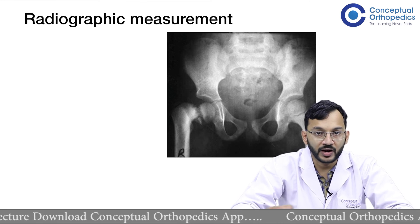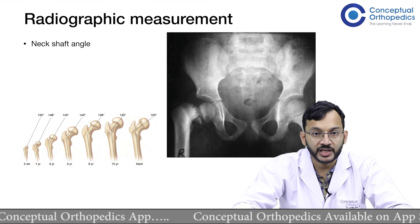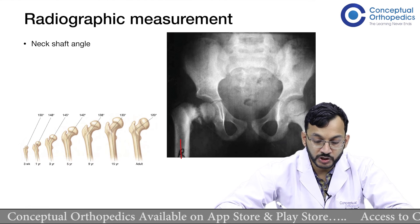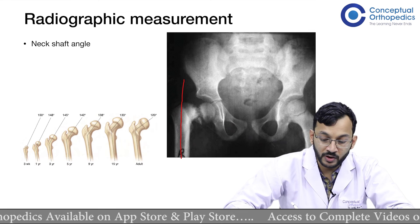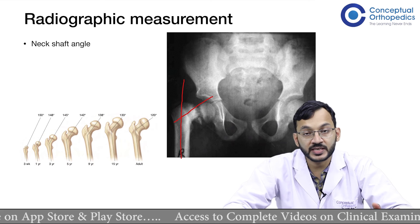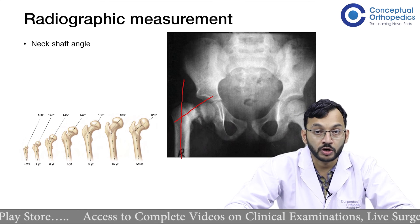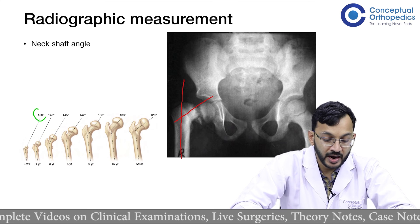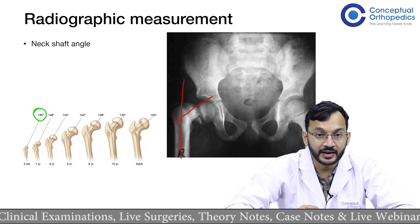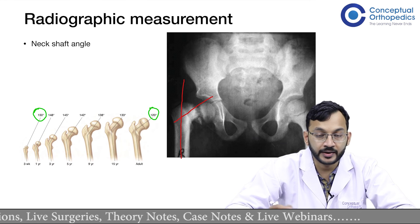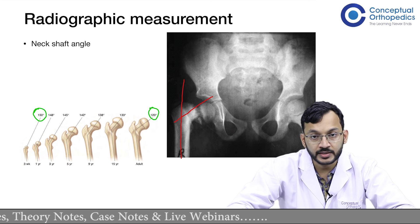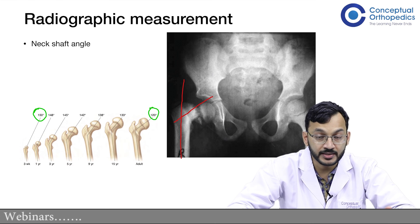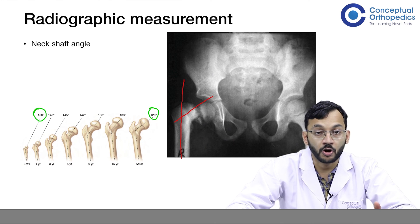Coming to radiographic measurements: the neck shaft angle is the angle drawn between the long axis of the femoral shaft and the long axis of the femoral neck. In children this angle is 150 degrees at birth and gradually decreases to 120 degrees in adulthood, with the normal adult range being 120 to 135 degrees. Anything less than 120 degrees is considered abnormal and is termed coxa vera.